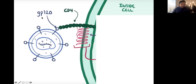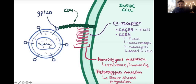GP120 binds to CD4. We have co-receptors: CXCR4 found on T cells, and CCR5 — which has a broader scope, covering T cells, macrophages, monocytes, and dendritic cells.